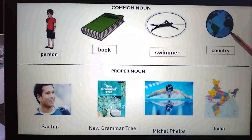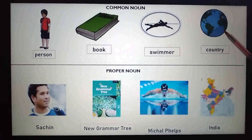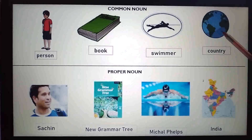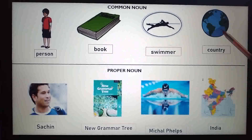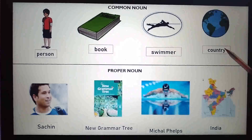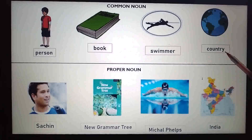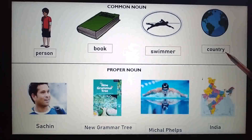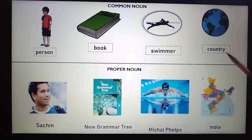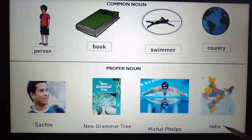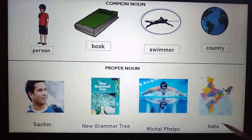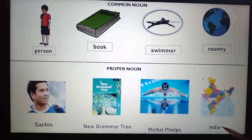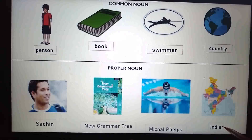Here, we see the picture of the earth. There are many countries on the earth. Country is a common noun. If a country is given a specific name, it becomes a proper noun. India is a special name given to a country. So, India is a proper noun.